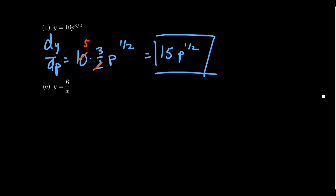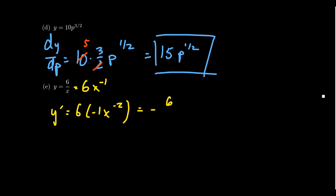For y equals 6 over x, it's easier to rewrite this as a power function: y equals 6 times x to the negative 1. By the power rule with the constant multiple rule, y prime equals 6 times negative 1 times x to the negative 2. Rewriting as a reciprocal function, we get negative 6 over x squared as the derivative.